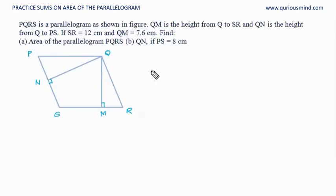Let's do the next one. PQRS is a parallelogram as shown in figure. QM is the height from Q to SR and QN is the height from Q to PS. If SR is 12 cm and QM is 7.6 cm, find area of parallelogram PQRS.